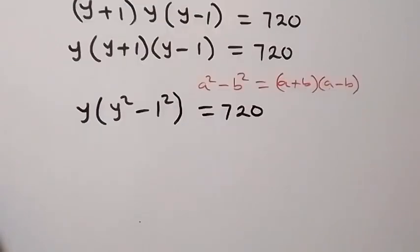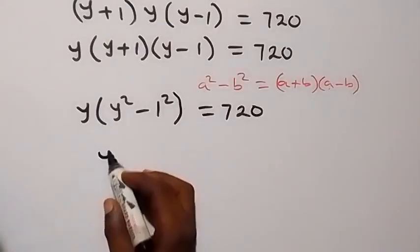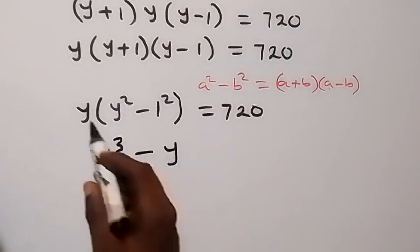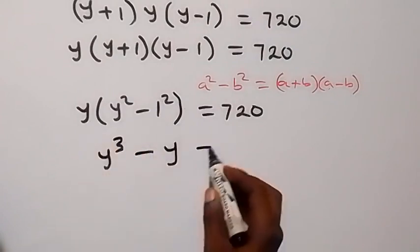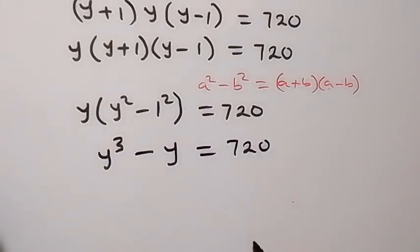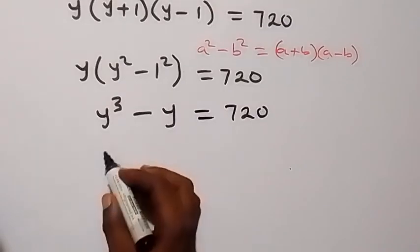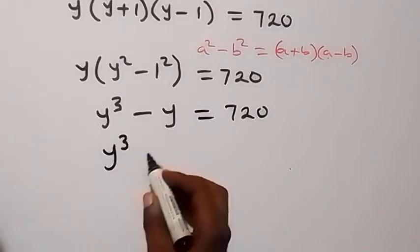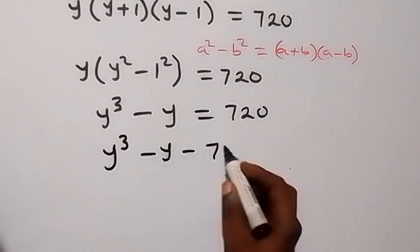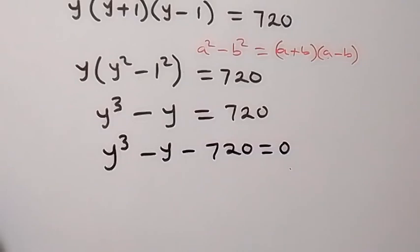Since 1 squared is just 1, we expand the bracket to get y³ minus y equals 720. Taking 720 to the other side, we have y³ - y - 720 equals 0.